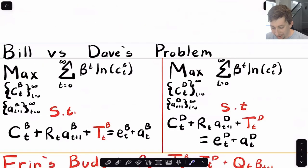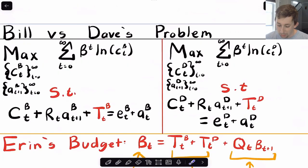So now let's talk about how their problem changes. For Bill's problem, it's going to be almost exactly the same. He's still trying to maximize his lifetime utility. He can choose how many coconuts to eat, how many assets to borrow or lend in any given period. But now in his budget constraint, he's going to pay a tax to Erin. And we're going to call that TTB.